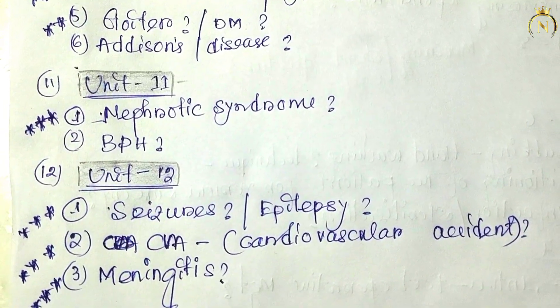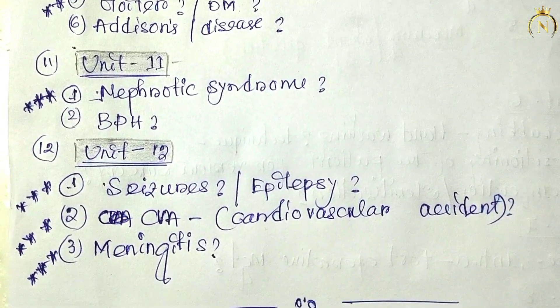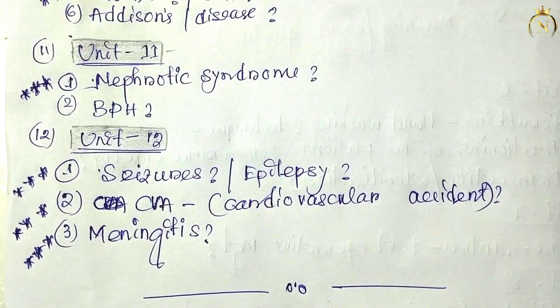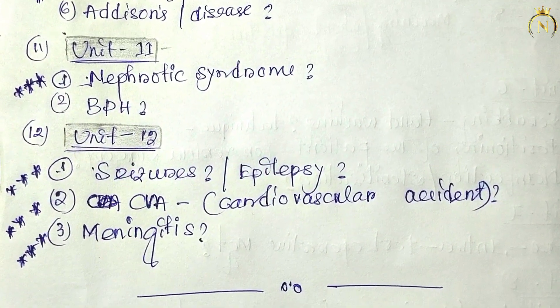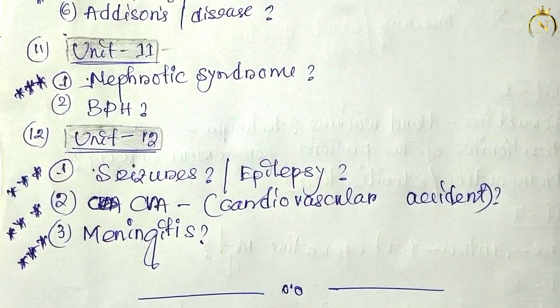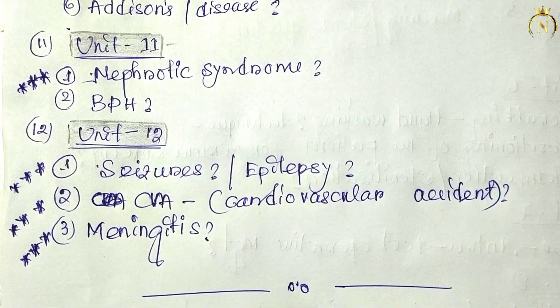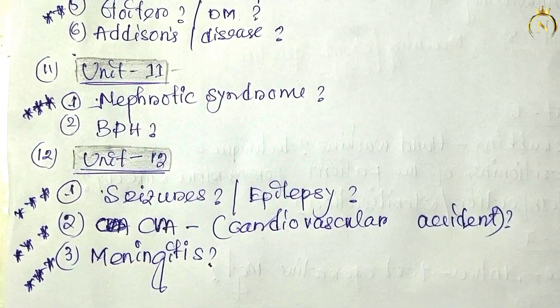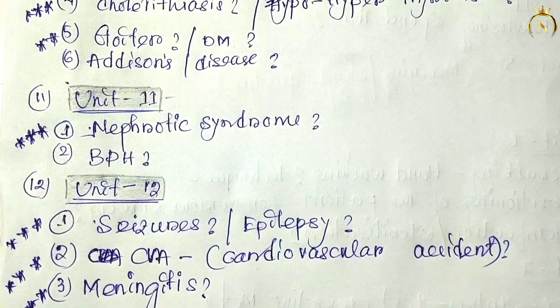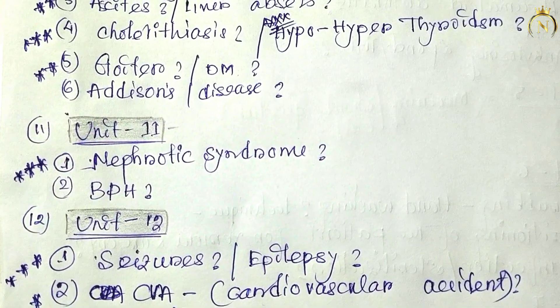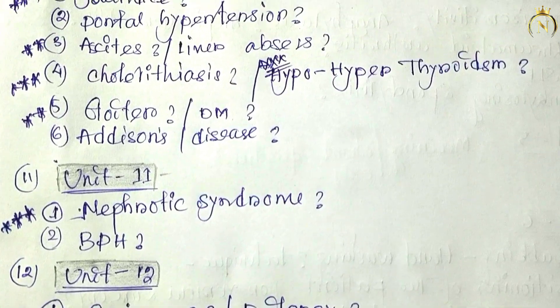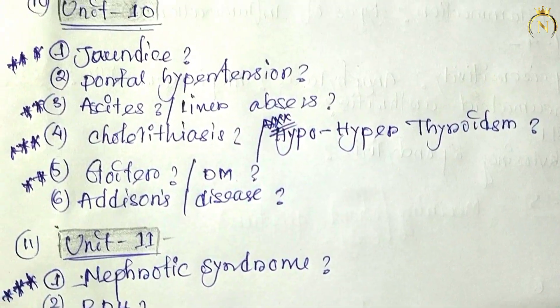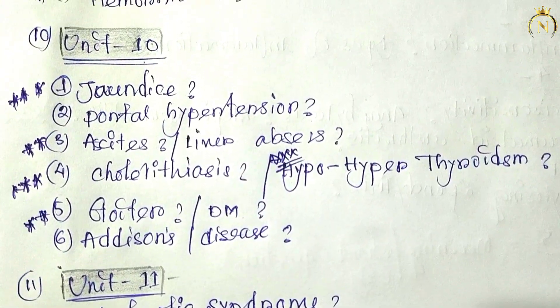Unit eleven: nephrotic syndrome is most important — so many times in the same course it has repeatedly come. Nephrotic syndrome only, and benign prostatic hypertrophy also sometimes comes. These are the questions you can prepare.